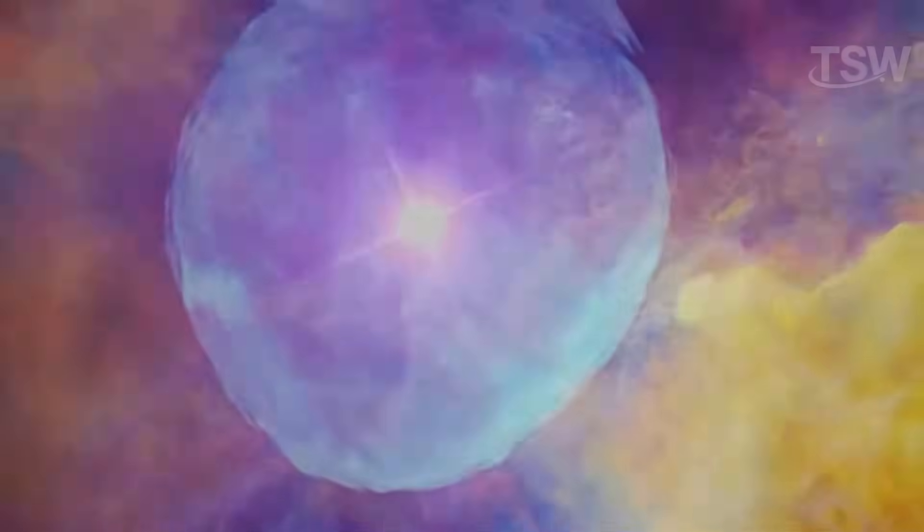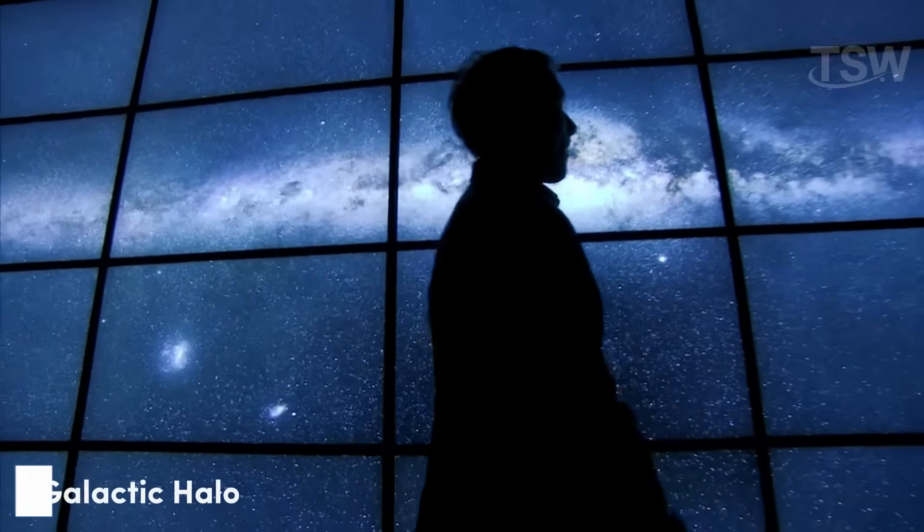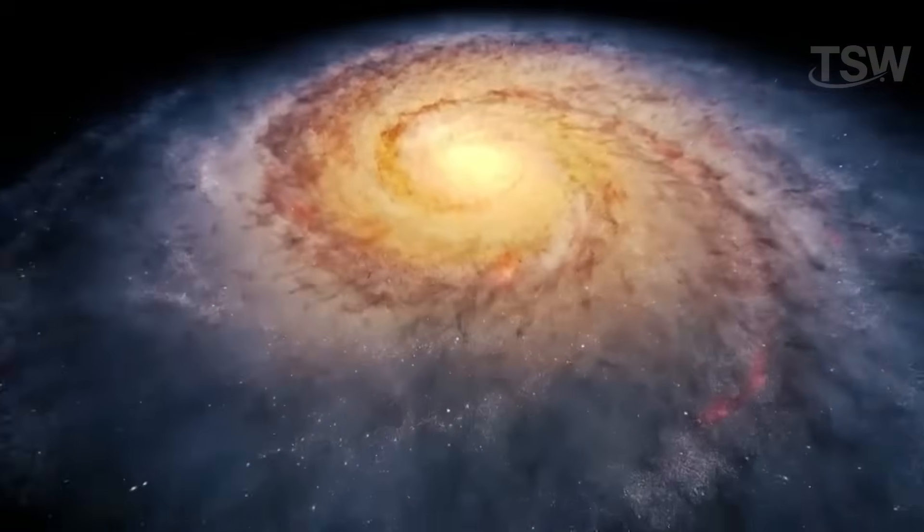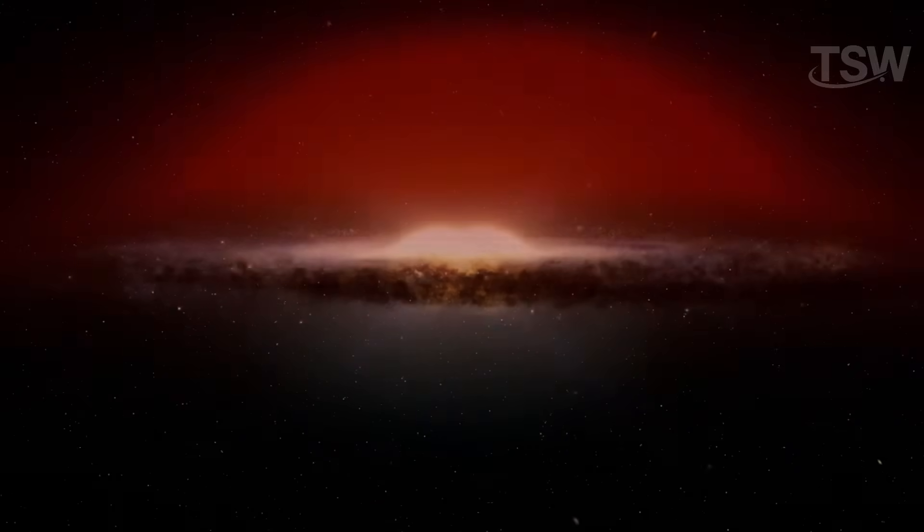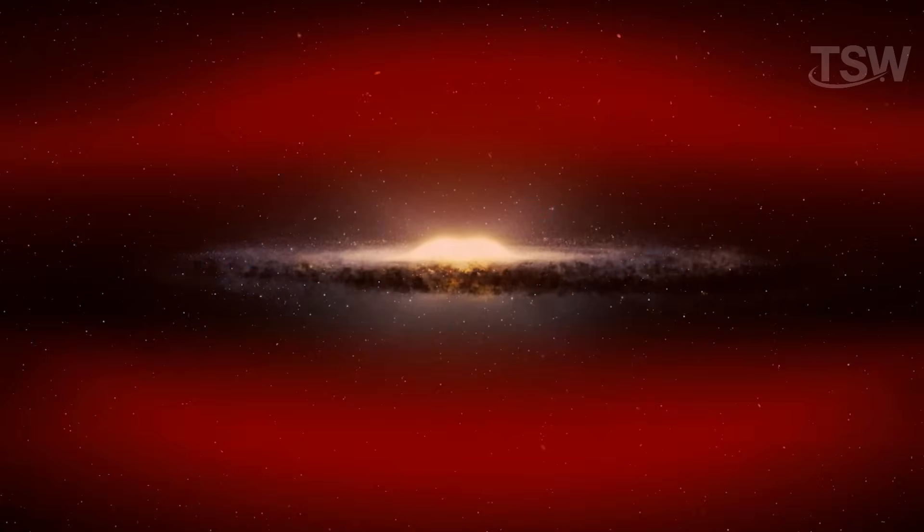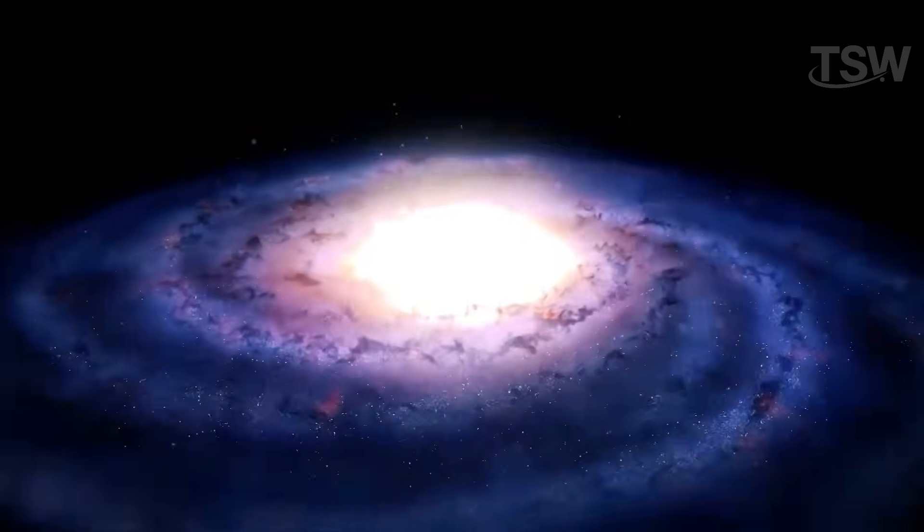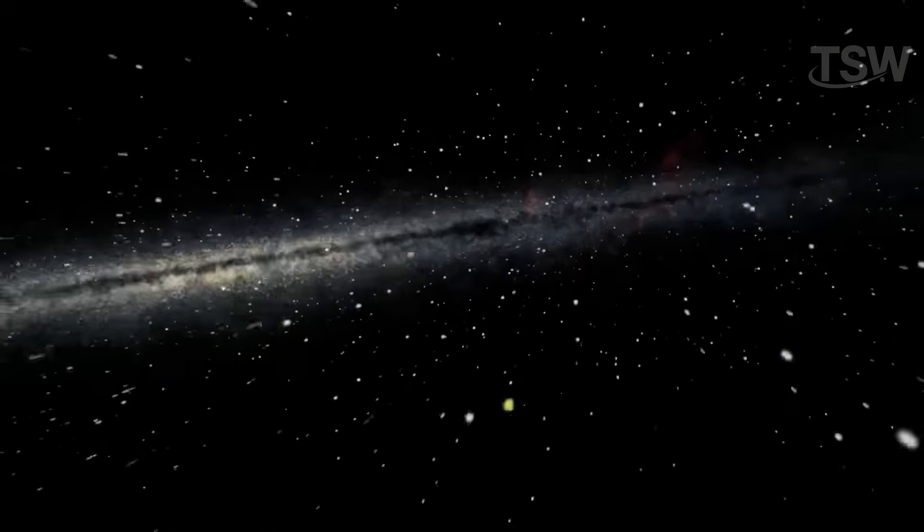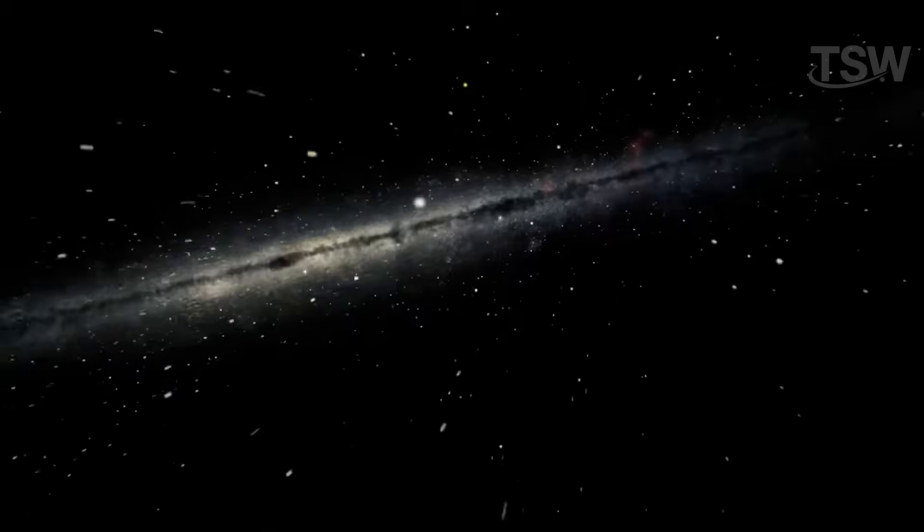Once we cross the edge of the disk, we enter a region known as the galactic halo. Unlike the flat part where most stars reside, the halo is spherical in shape and divided into different layers. The first of these is the stellar halo, filled with ancient stars and globular clusters. These clusters are groups of stars bound together by gravity, forming spherical structures that orbit the center of the Milky Way.